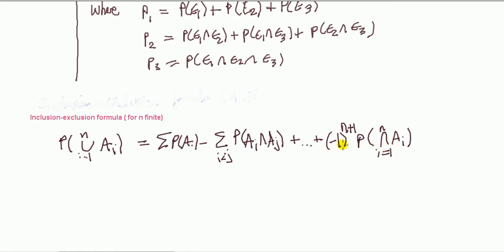And then whether it's a plus or minus sign depends on whether n is odd or even. So anyway, the series goes as follows. Add everything, minus intersections, double intersections, intersections of any two events.